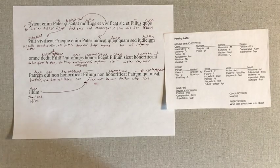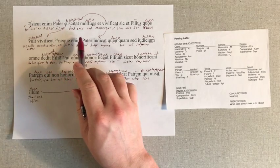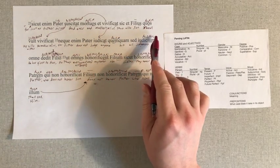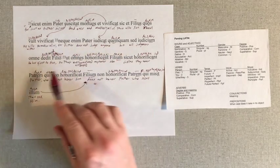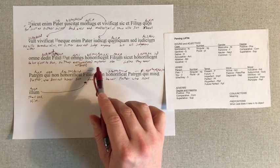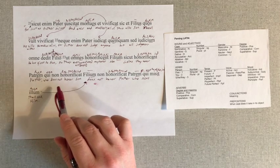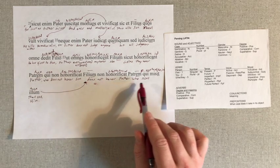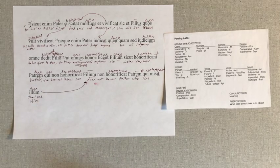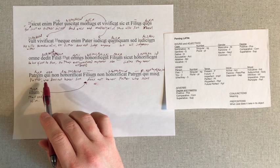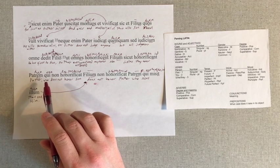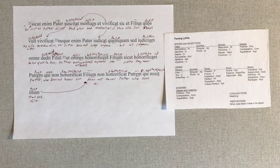For just as the father raises dead ones and makes them alive, thus also the son — whom he wills — he makes alive. For father does not judge anyone, but all judgment he has given to son, so that everyone may honor son, just as they honor father. Who does not honor son does not honor father, who sent him. I think qui is not as clear here as it could be, but I'm not sure if ille qui would fix the problem. That's my final thought on that.